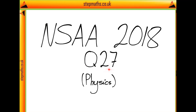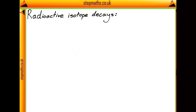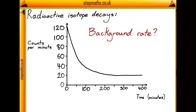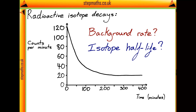Here we're going to look at question 27 from the NSA 2018 paper. In this question, we're told of a radioactive isotope decaying. We're then given a graph of how the activity of this radioactive isotope changes with respect to time. The question asks us what is the background rate of radiation and what is the half-life of our isotope.